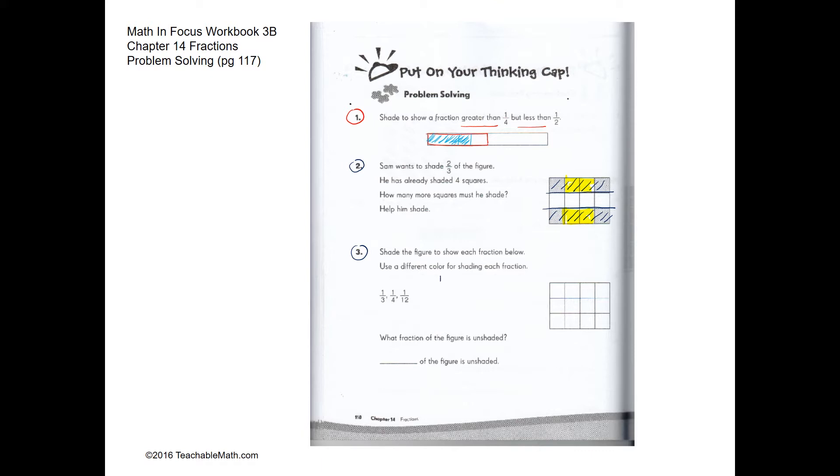Question three: we need to shade one third of 12 squares. One third of 12 is four, so we shade four squares. Next, one fourth of 12 is three, so we shade three squares. Lastly, one twelfth of 12 is one, so we shade one more square.